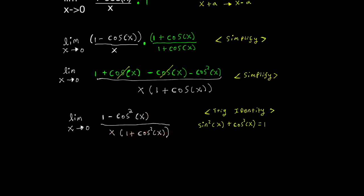Next, I will make use of a trig identity: sine squared of x plus cosine squared of x equals 1. Now if I tweak this just a little bit by subtracting cosine squared of x on both sides, I get that sine squared of x is equal to 1 minus cosine squared of x.